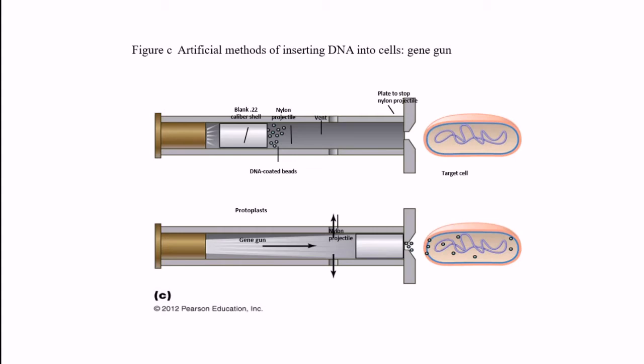The gene gun is mainly used for plant cells because they have a thick cell wall. To disrupt the thick cell wall, we use the particulate gun method. They use helium gas to generate high pressure. DNA-coated beads are projected toward the target cell with high pressure, rupturing the cell wall so the genetic material can recombine.